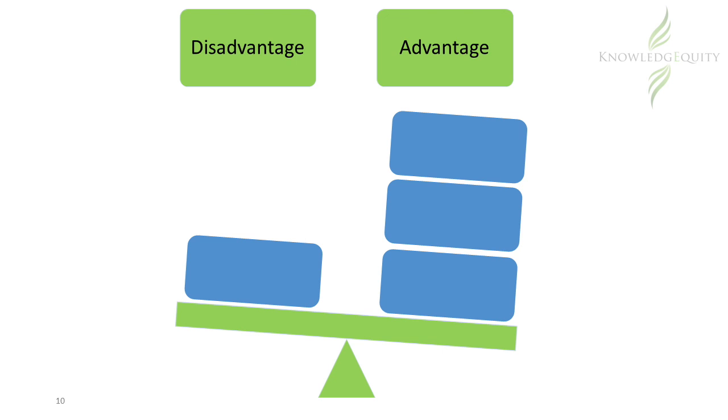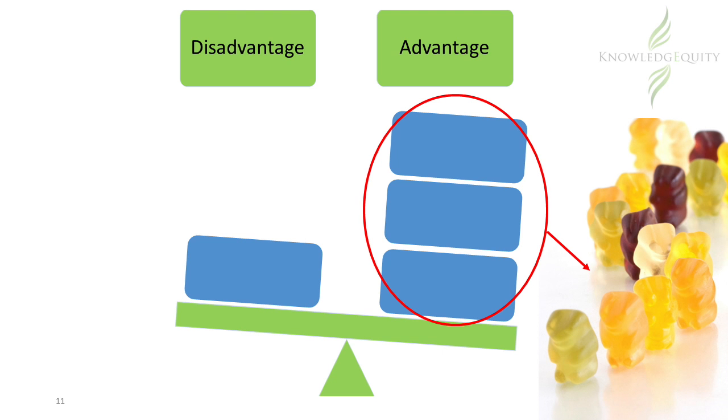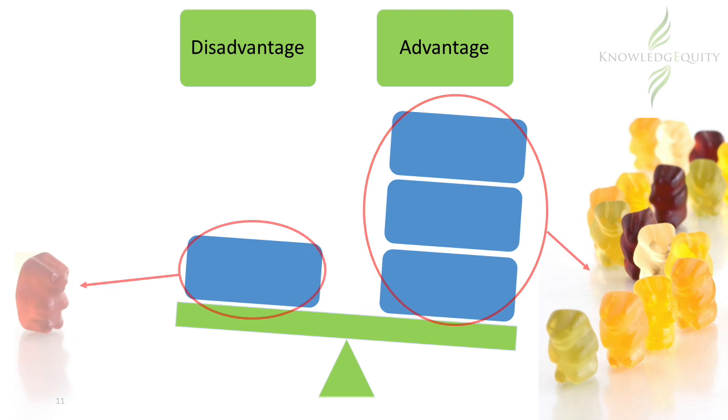Under utilitarianism, a decision or action would be considered ethically correct if it results in the greatest good to the greatest number of people. The converse is also true. That is, if a disadvantage cannot be avoided, then a decision or action that would result in the smallest number of people suffering would be ethically correct.